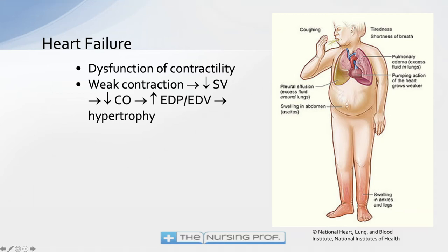We have a dysfunction of contractility, which means over time the contraction starts to weaken. In order to maintain cardiac output, we have to kick in compensatory mechanisms: the sympathetic nervous system, the renin-angiotensin system, and aldosterone. Those things start kicking in and we see what we consider the symptoms of heart failure — coughing, tiredness, shortness of breath, pulmonary edema, pleural effusions, swelling in the abdomen, and swelling in the ankles and legs.